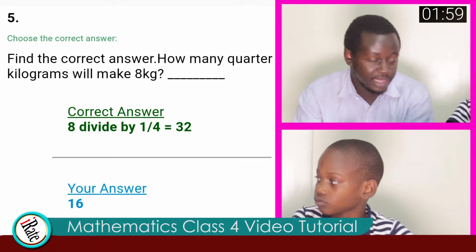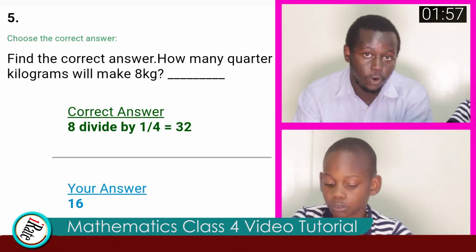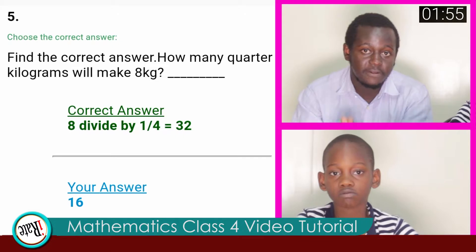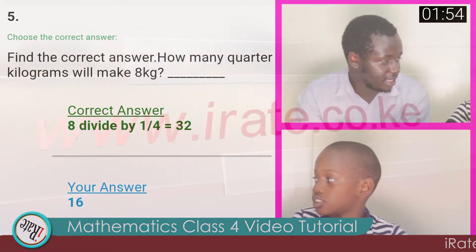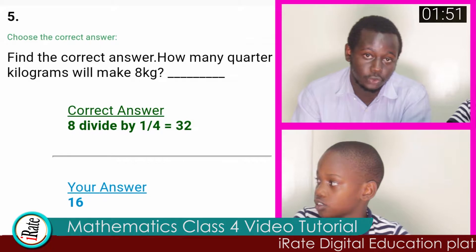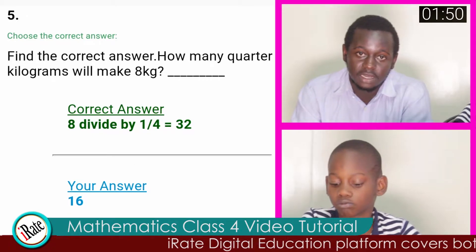If in every one kilogram, there are how many quarters? Four quarters. Yes. So you multiply four times eight. And what is four times eight? Thirty-two. So thirty-two is the correct answer.